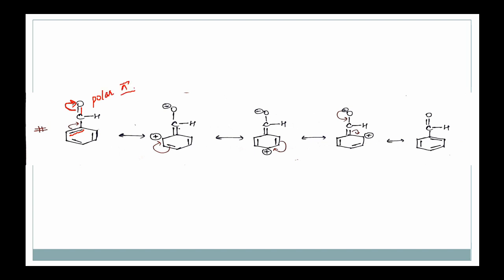The pi bond breaks because it is polar — oxygen is more electronegative compared to carbon. So this bond breaks, oxygen takes the electron density, and ultimately this carbon gets a positive charge. Then this double bond of benzene goes into resonance to end that electron deficiency. What we observe is that this carbon has a positive charge. Now this double bond comes into resonance — and ultimately we have delocalized and realized that ortho and para positions carry a positive charge.